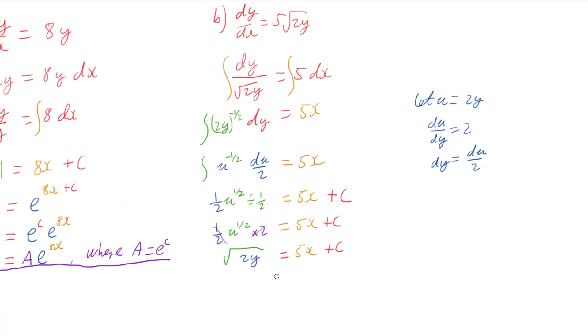And now I just need to isolate the y on this side. So if y is a function of x, that means I can take the square of both sides. That's going to leave me with 2y equals 5x plus c, but squared.